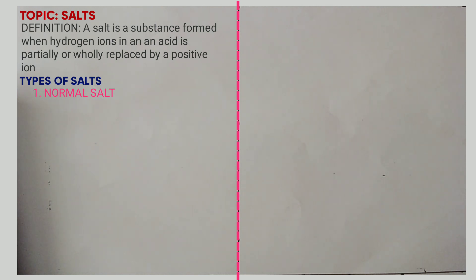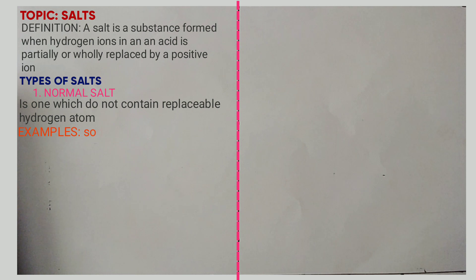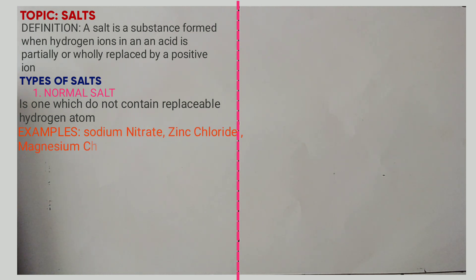A normal salt is one which does not contain a replaceable hydrogen atom. Examples include sodium nitrate, zinc chloride, magnesium chloride, etc.